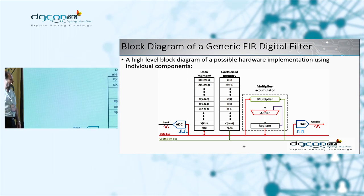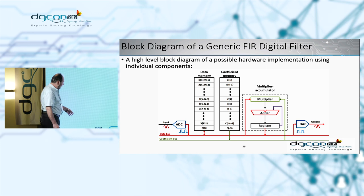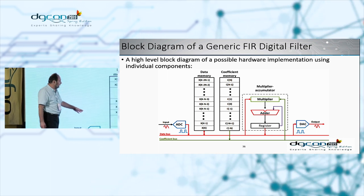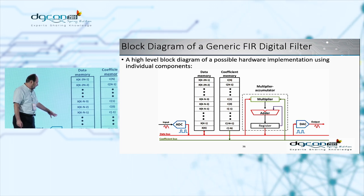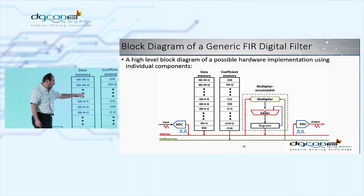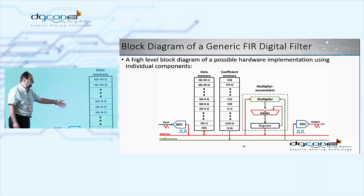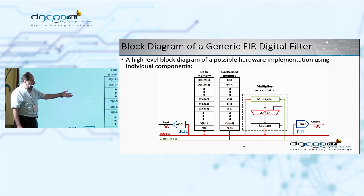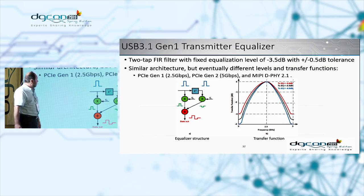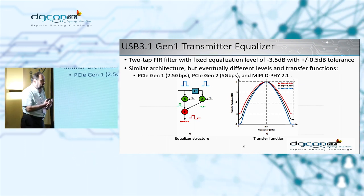The generic block diagram of a digital FIR filter consists of an analog-to-digital converter that samples the signal and stores samples in a data memory. Tap coefficients are stored in a coefficient memory. The two are fetched together, multiplied, and accumulated, then provided to a digital-to-analog converter to reconstruct the analog signal.